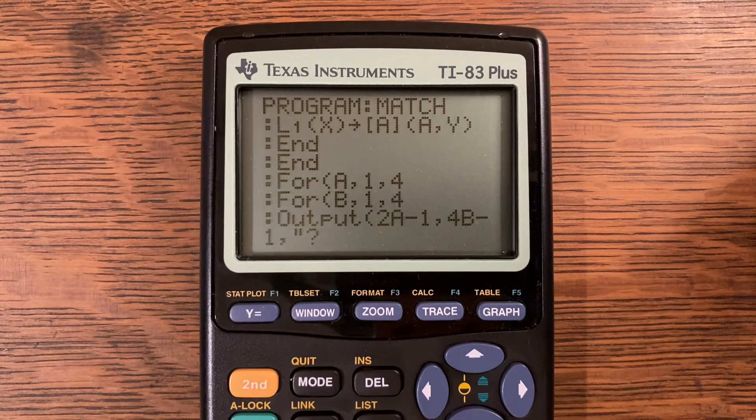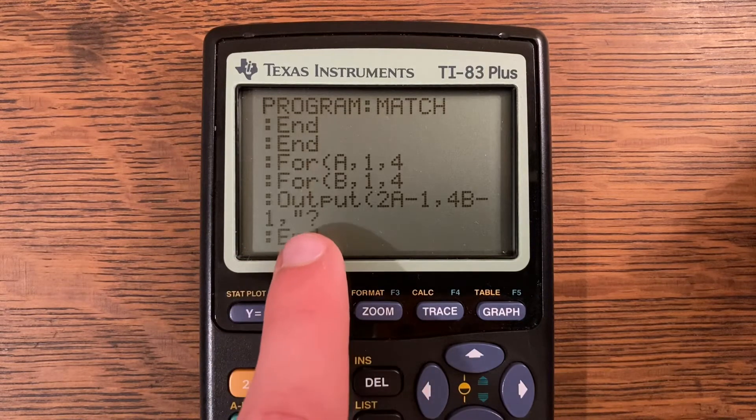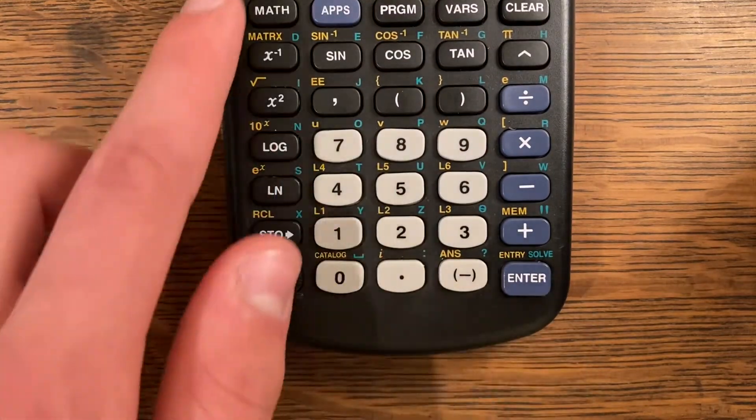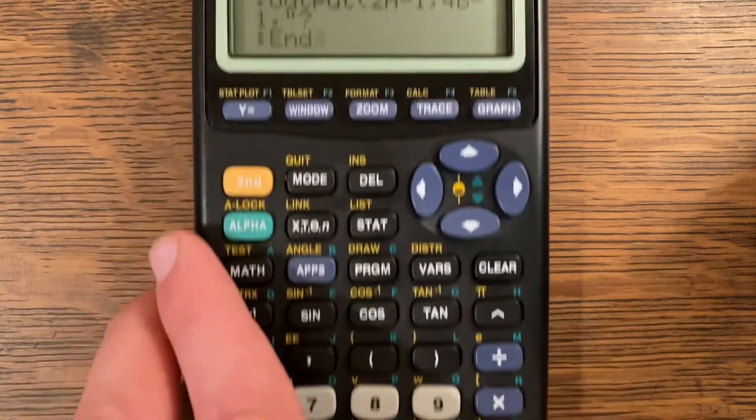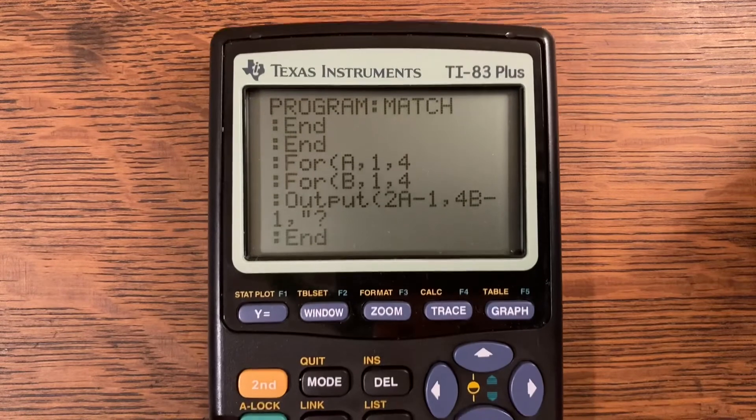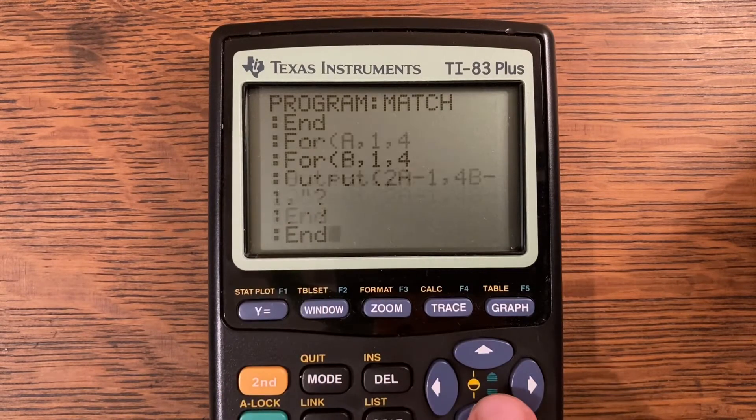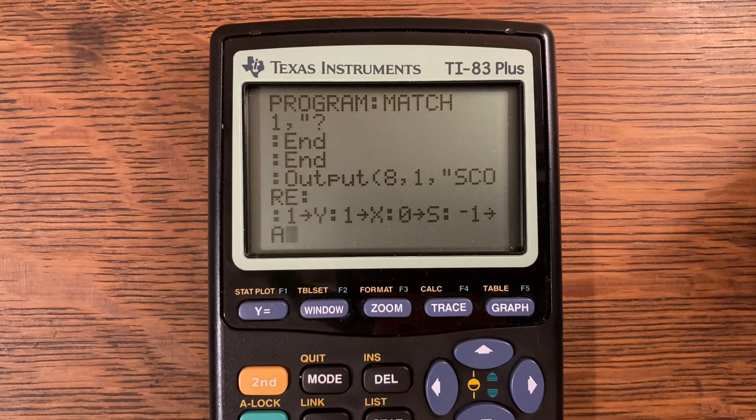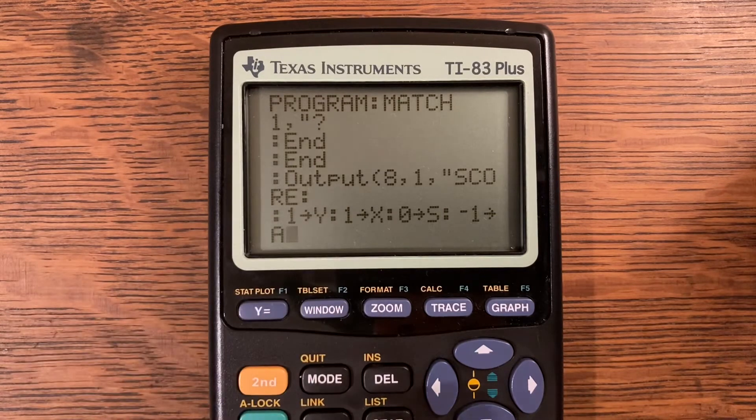For A comma 1 comma 4, For B comma 1 comma 4, Output 2A minus 1 comma 4B minus 1 comma quote question mark. To find the question mark, it's Alpha and then the negative symbol. Then we have End, two Ends there to end the two for loops. Then Output A comma 1 comma quote Score and a colon. One store into Y, one store into X, zero store into S, and negative one store into A.